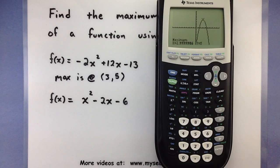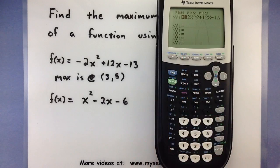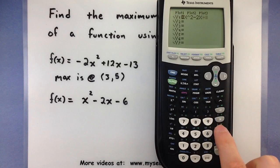Alright, so that's how this works. Let's do this process again for the second one and see how we find a minimum. So let's go to our y equals, let's clear this old one out, x² - 2x - 6.